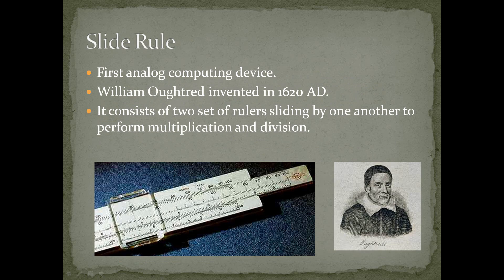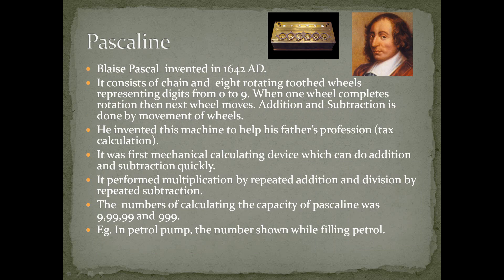The slide rule is the first analog computing device. William Oughtred invented it in 1620 A.D. It consists of two sets of rulers sliding by one another to perform multiplication and division.